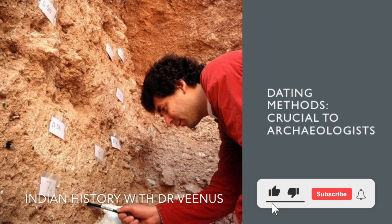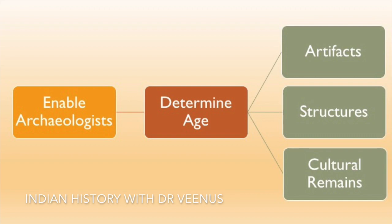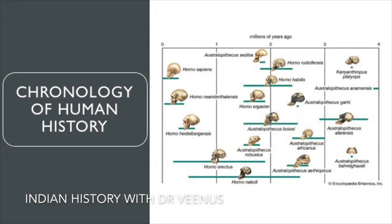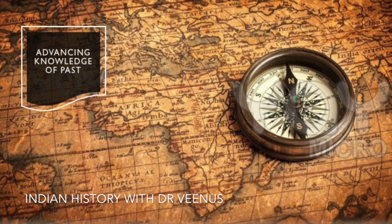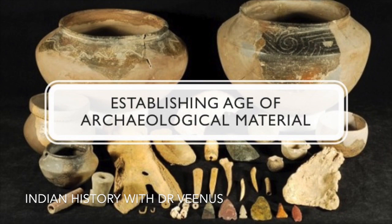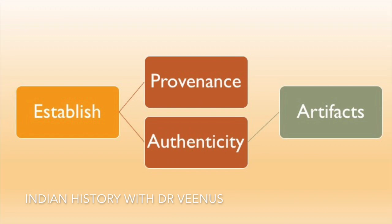Dating methods are crucial to archaeology because they enable archaeologists to determine the age of artifacts, structures and other cultural remains. Understanding the chronology of human history as well as the sequence and relationships between different cultures and civilizations is essential in advancing our knowledge of the past. By establishing the age of archaeological material, dating methods help archaeologists understand technological and cultural developments over time, as well as establish the provenance and authenticity of artifacts.